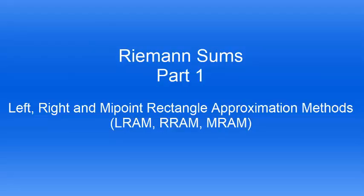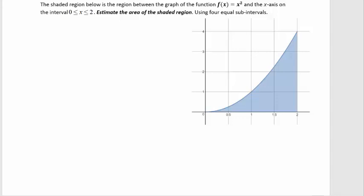Riemann sums part one will talk about the left, right, and midpoint rectangle approximation methods. To illustrate this technique, we're going to use the function x squared bound by the x-axis on the interval from 0 to 2. In this case, we would like to use four equal subintervals.